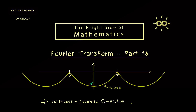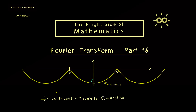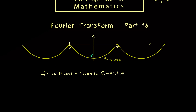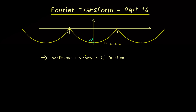The result we have is a continuous function defined on ℝ, which is also piecewise C1. From the last videos we already know that for such a function the corresponding Fourier series is uniformly convergent to the original function, so in particular it's also pointwise convergent at every point, which means we get a sum formula at every point.